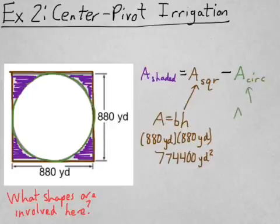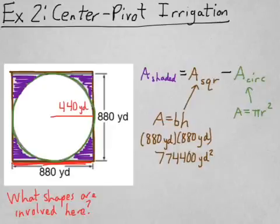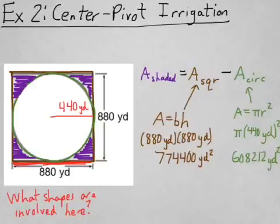What about the circle? The formula for area of a circle is pi r squared. But now, what's the radius? Well, if you notice, the length of the entire side of the square is 880 yards, which would be the same as the circle's diameter. So that means that the radius is half of that, which is 440. So that means I have pi times 440 yards squared, which would give me about 608,212. I rounded to a whole number because it's such a giant number.